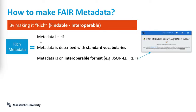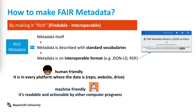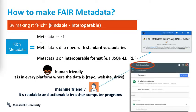Rich metadata means that we have to take the metadata itself, but the metadata has to be also described with standard vocabularies — not arbitrary names. Also, the metadata must be in an interoperable format like JSON-LD or RDF. Please see the references for more information. There are tools that can help you transform to those formats. This way we make sure it's human friendly, because the metadata files will be on every platform the data is — like repositories, websites, or institutional drives — but also machine friendly, meaning it's readable and actionable by other computer programs.